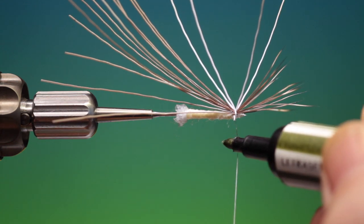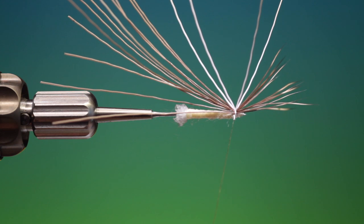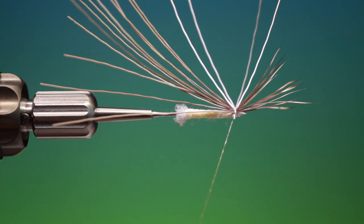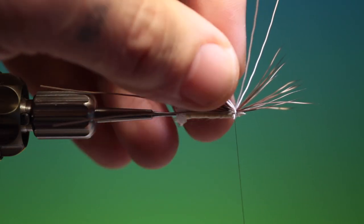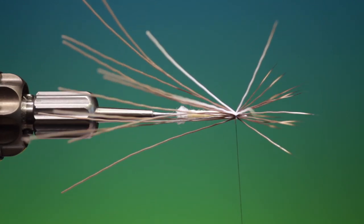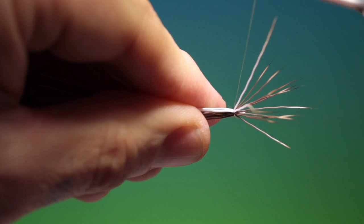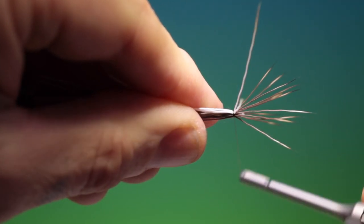So we take some olive waterproof marker and just color our Dyneema or GSP, whatever you're using, for the rib. If I spin that around a little maybe you'll see better. So what we do now is we just make the first body segment.